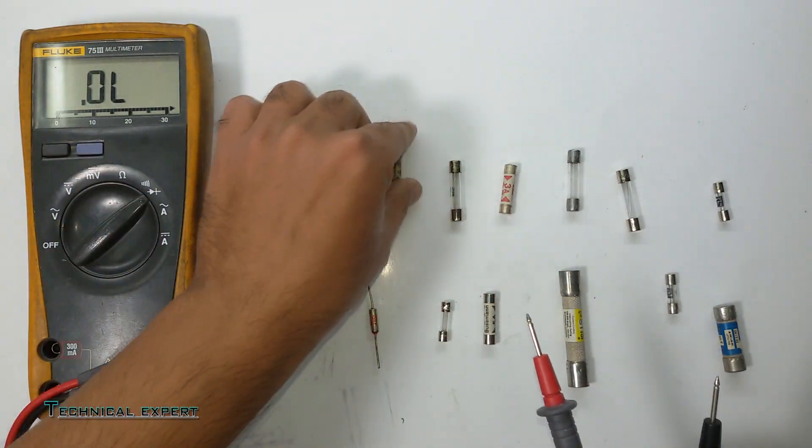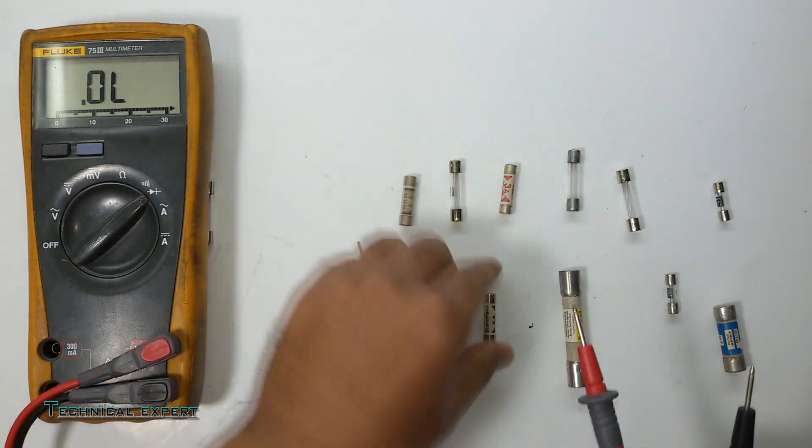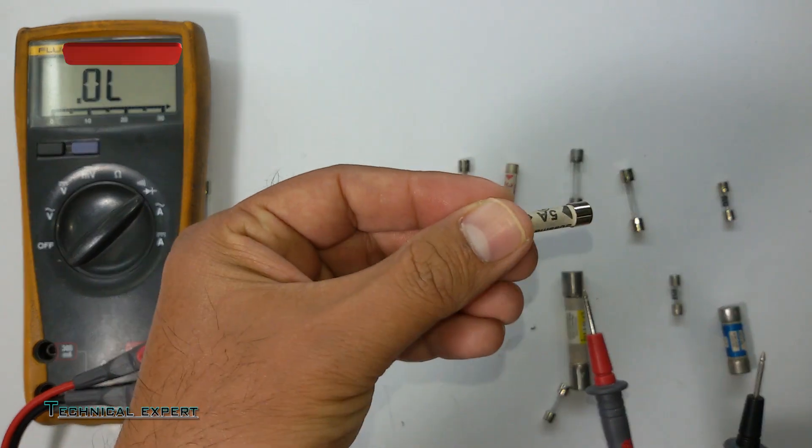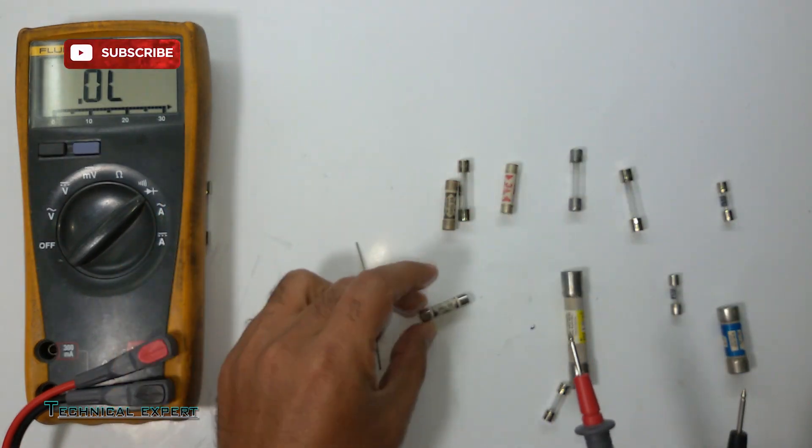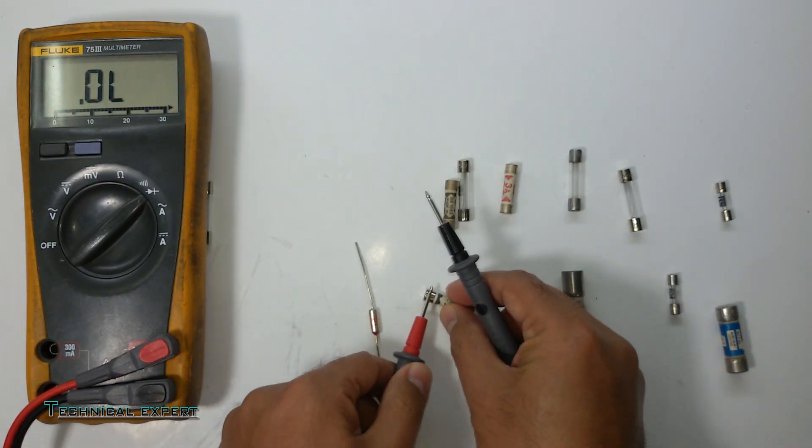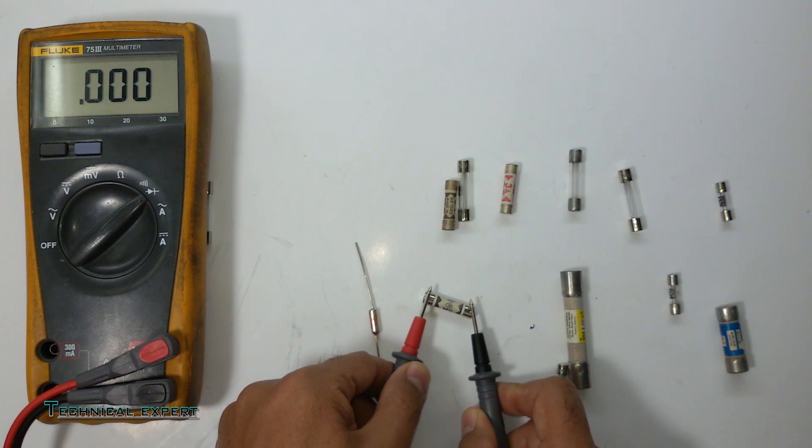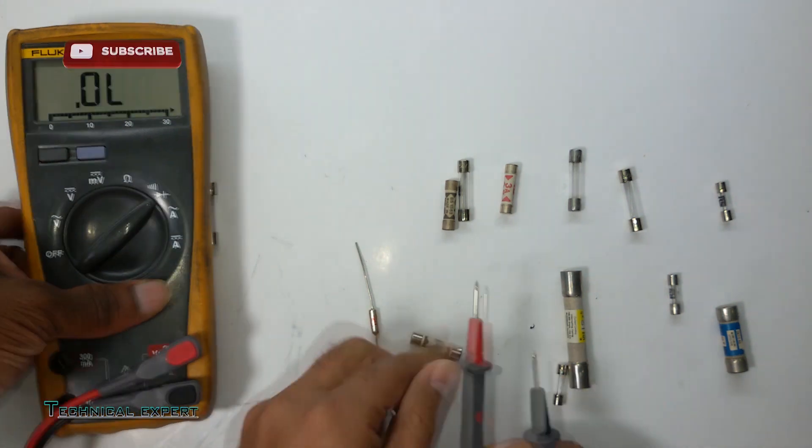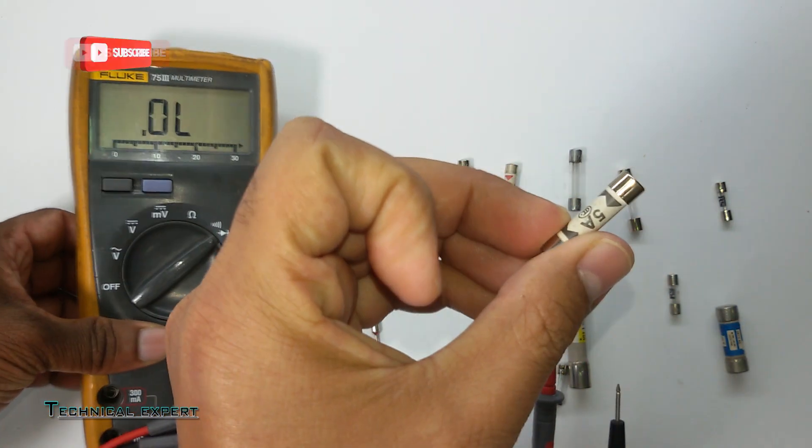Just take one fuse. This is 5 ampere fuse. Very simple how to check, just put it here and check with your probe. Here we go, this beep means this fuse is okay. This 5 ampere fuse is okay. We are keeping it here.